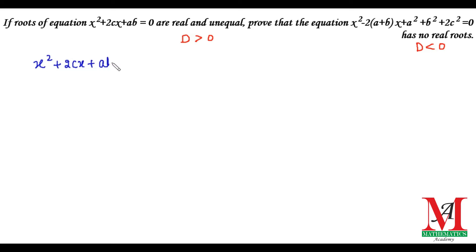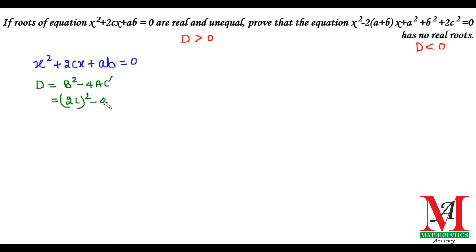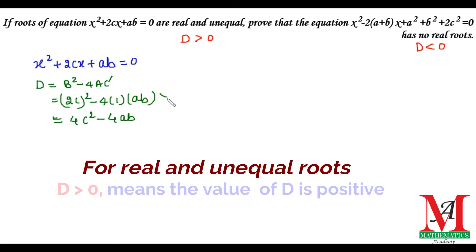From the first equation, x² + 2cx + ab = 0, we find the discriminant D using the formula b² - 4ac. Here, b is the coefficient of x, which is 2c; a is the coefficient of x², which is 1; and c (the constant term) is ab. On substitution, D = (2c)² - 4(1)(ab) = 4c² - 4ab, and since D > 0, this result is greater than 0.